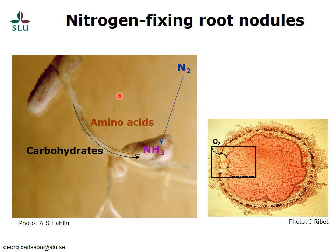In exchange, the plant sends carbohydrates from its photosynthesis to the roots and into the root nodules. When these carbohydrates are metabolized, they provide energy for the nitrogen fixation process.